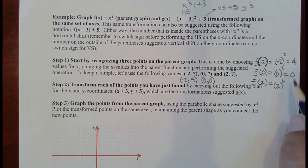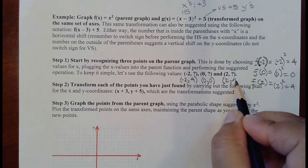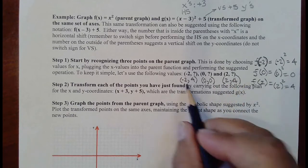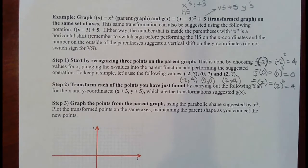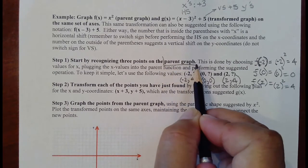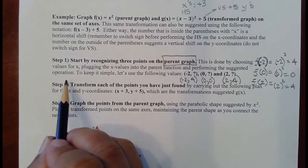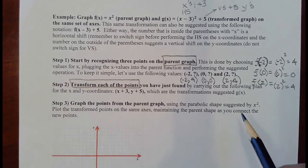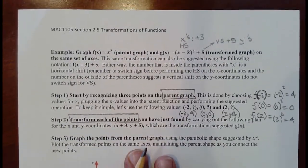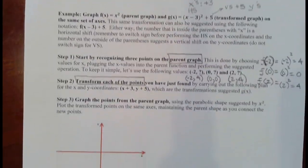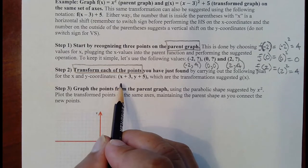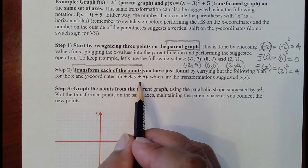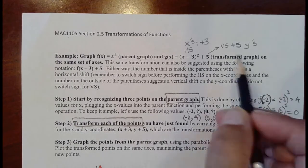Now we're going to get the points on the transformed graph, not just the parent graph — we're going to transform each of the points. The plan is to add 3 to our X's for the horizontal shift, and to add 5 to our Y coordinates for the vertical shift, as discussed. Let's carry out the transformed points — first transforming all of our X's, then all of our Y's, so we don't mix things up.